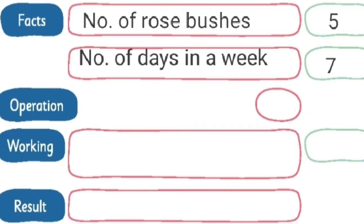Then we have to write the number of days in a week. We have to find out the number of rose bushes at the end of the week. How many days are there in a week? Yes — seven days. So we can write: number of days in a week — seven.